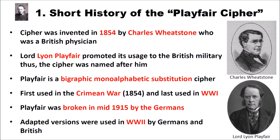The Playfair cipher is a bigraphic monoalphabetic substitution cipher, which we will explore on later slides. The Playfair cipher was first used in the Crimean War in 1854 and it was last used during World War I. It was broken in mid 1915 by the Germans, but adapted versions were used in World War II by both Germans and British.